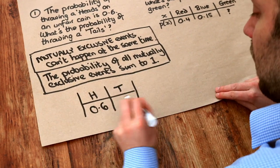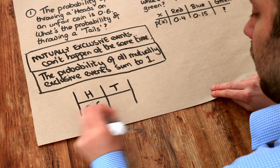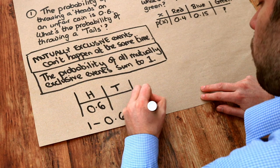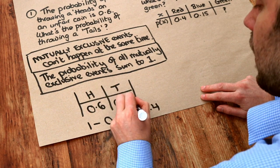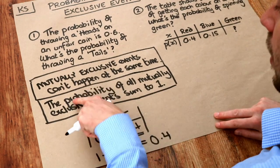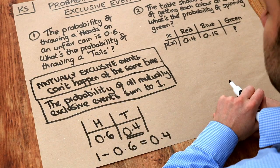Well these two have to add up to one according to this. So that would have to be, if we subtract 0.6 from one, we get 0.4. So that's 0.4 and that is the answer. Let's just check: 0.6 plus 0.4, they add up to one. The probability of all mutually exclusive events sum to one.